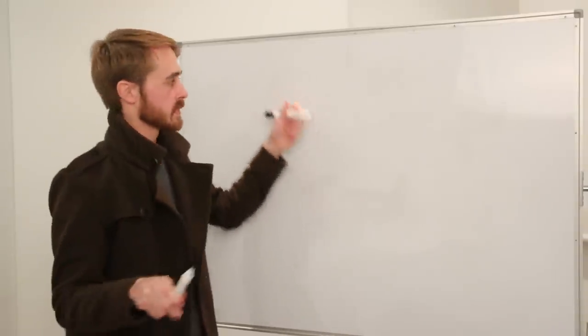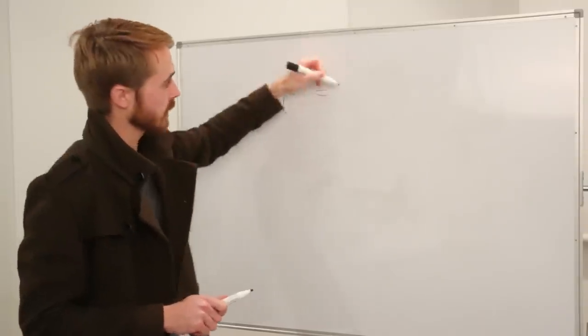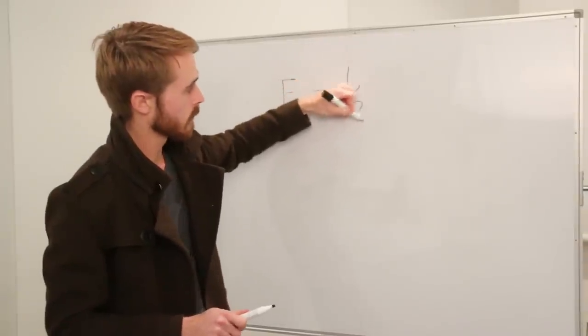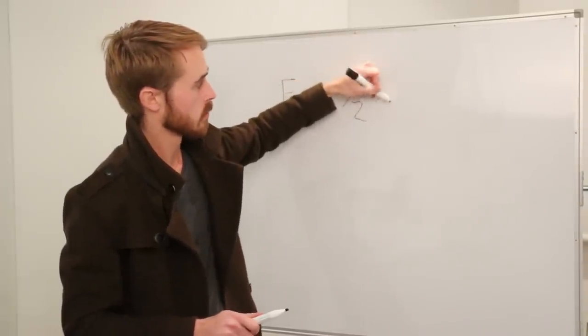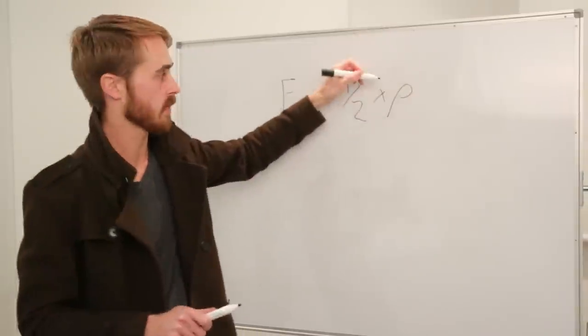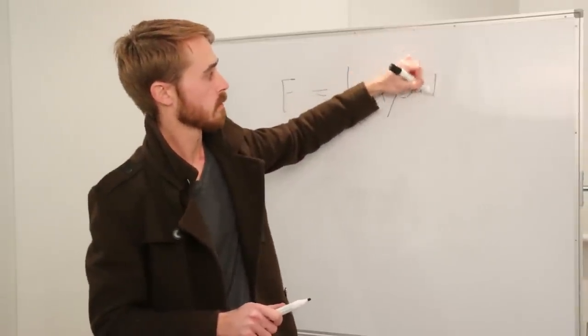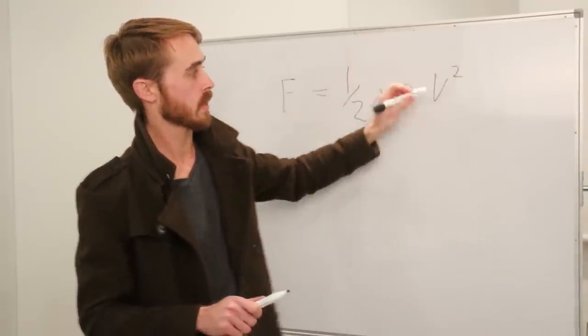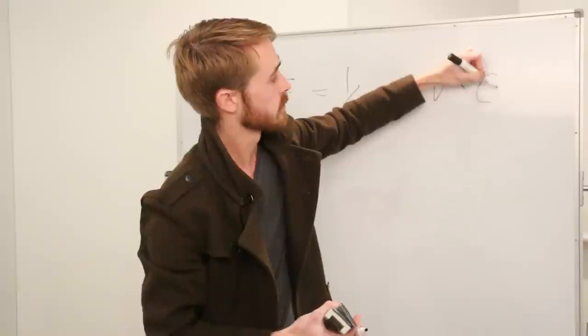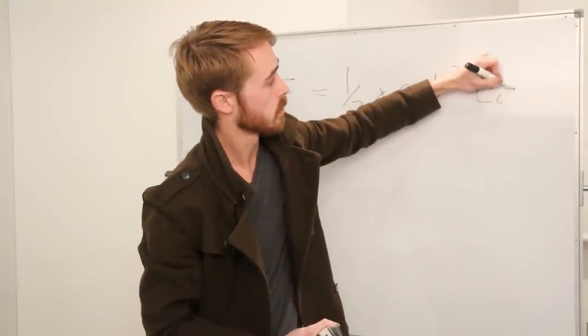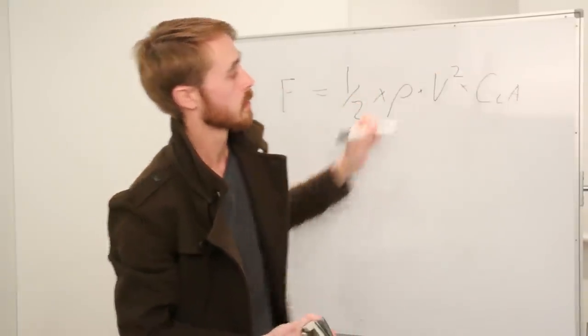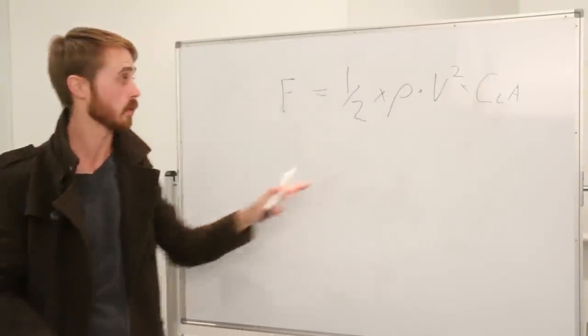Formula for downforce very simple. So your downforce equals a half times rho density of air, V squared velocity squared, C L A. Okay so this is the C L A I was telling you about from before.